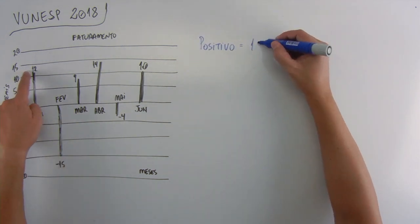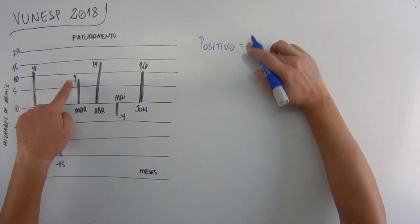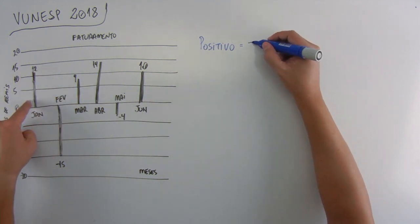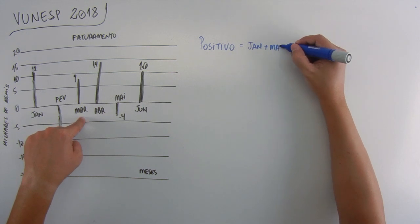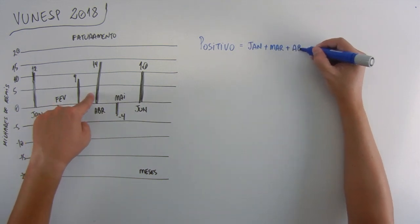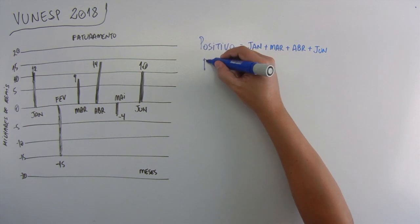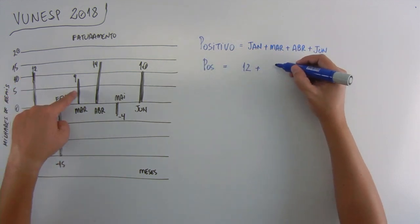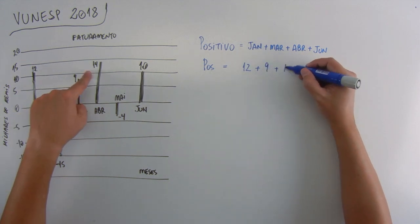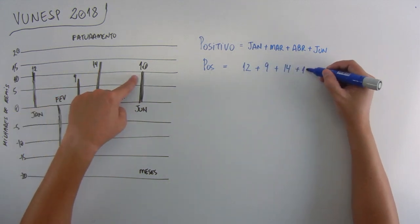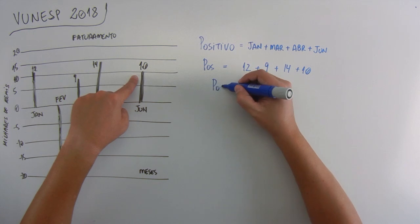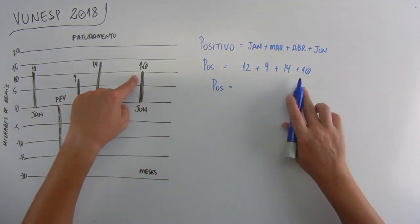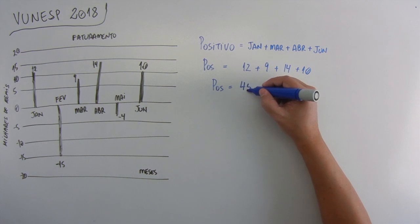Positivo foram os meses de janeiro, março, abril e junho. Os números são 12 mais 9 mais 14 mais 10. Então o saldo positivo dessa empresa, fazendo essa soma, vai ficar de 45 mil reais.